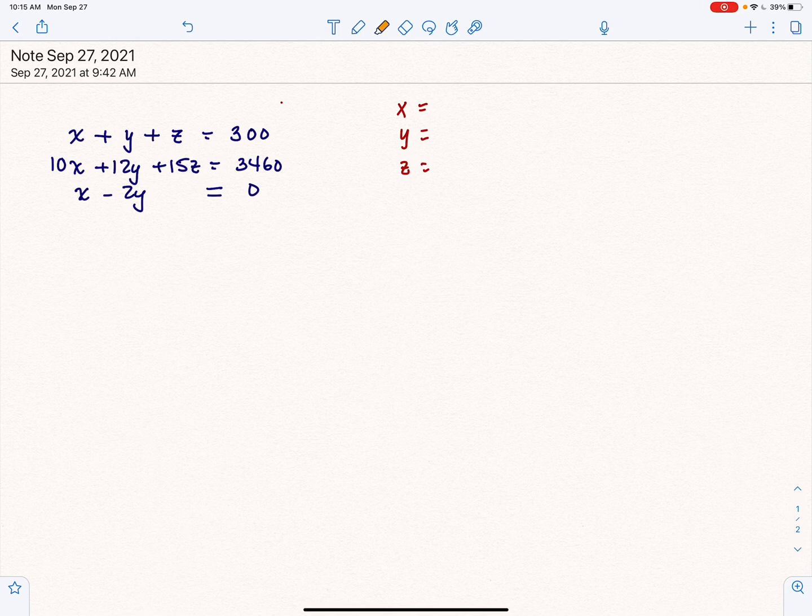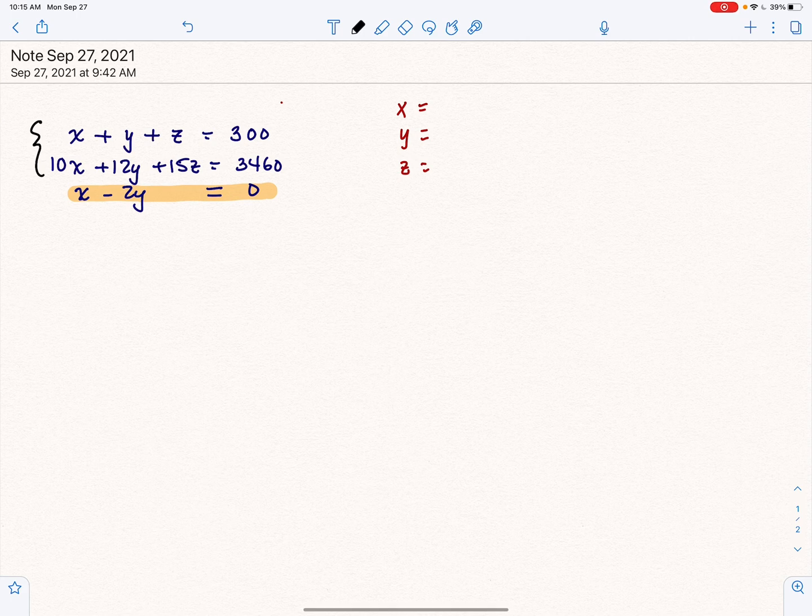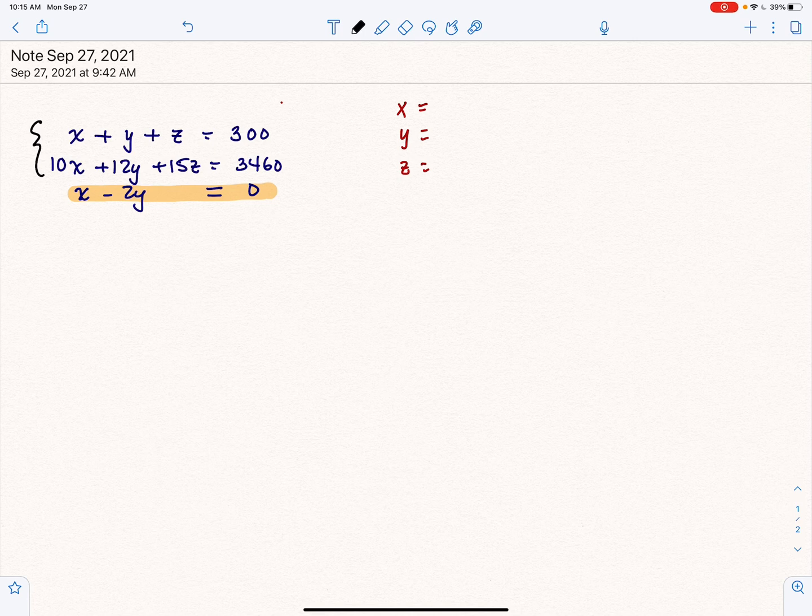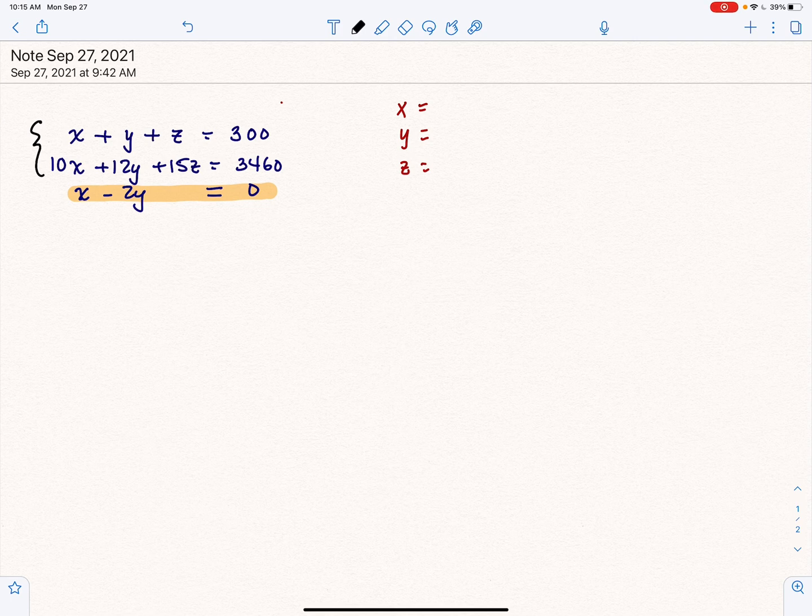So as you can see, this last equation only has an x and a y in it. So it makes sense to take the first two equations and eliminate the z. Remember, you have a lot of flexibility with which variable you eliminate, but we have to make sure that it's useful for us.